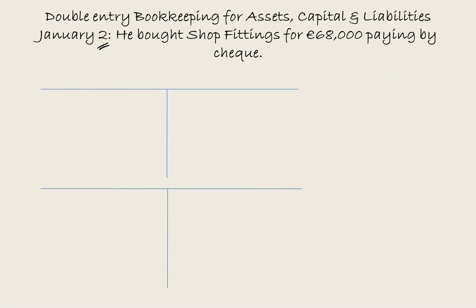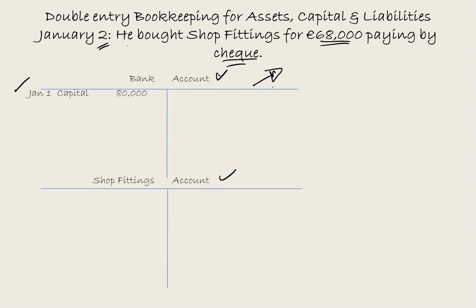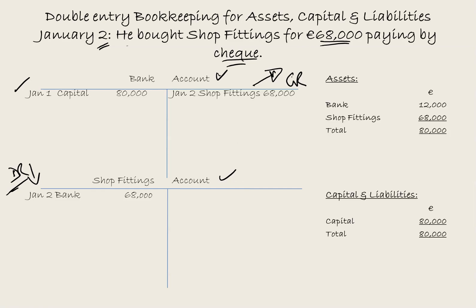For January 2nd, Mr. Purple bought shop fittings for $68,000 by cheque, meaning the money came out of the bank. Money coming out of the bank reduces an asset, so we put that on the credit side of the bank account. We are increasing the asset of shop fittings, so we write it on the debit side of the shop fittings account. The accounting equation: total assets are still $80,000 — bank has dropped to $12,000 and shop fittings is now $68,000. Capital and liabilities remains $80,000.